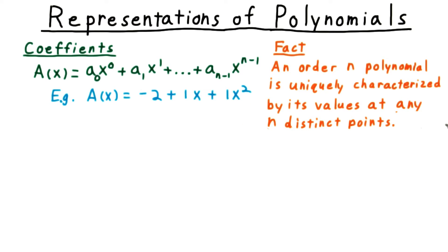If you've ever worked with polynomial interpolation or fitting before, however, you will know that an order n polynomial is uniquely characterized by its values at any n distinct points. The order of a polynomial, by the way, is the number of coefficients used to define it, or the degree plus 1.